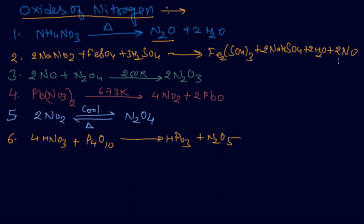Second is nitric oxide, that is NO. It can be formed by sodium nitrate with FeSO4 and sulfuric acid upon heating. The products are ferric sulfate, sodium hydrogen sulfate, water, and nitric oxide. It is colorless and neutral.